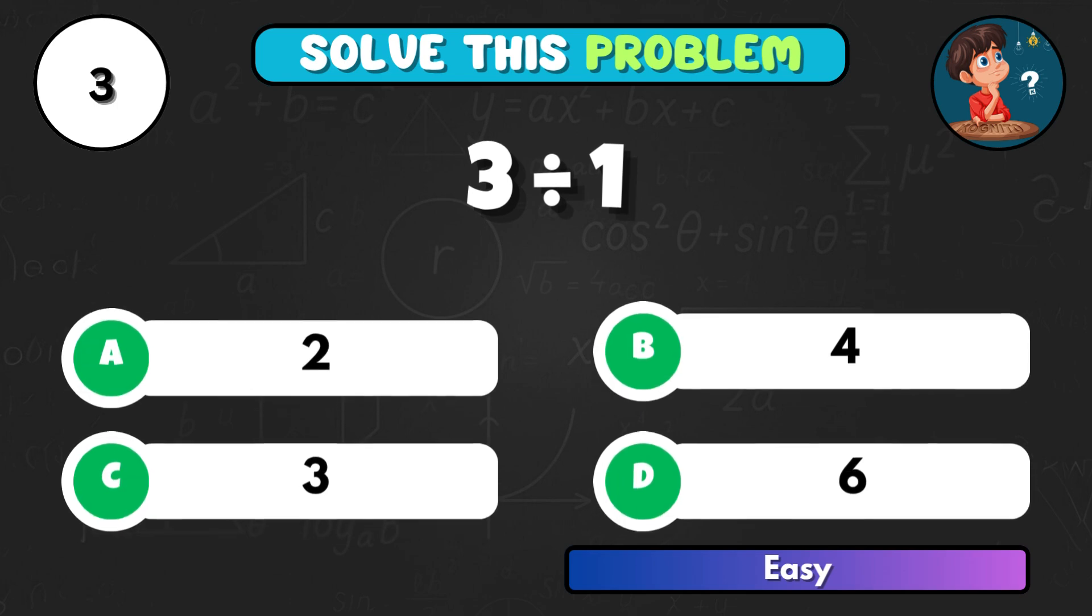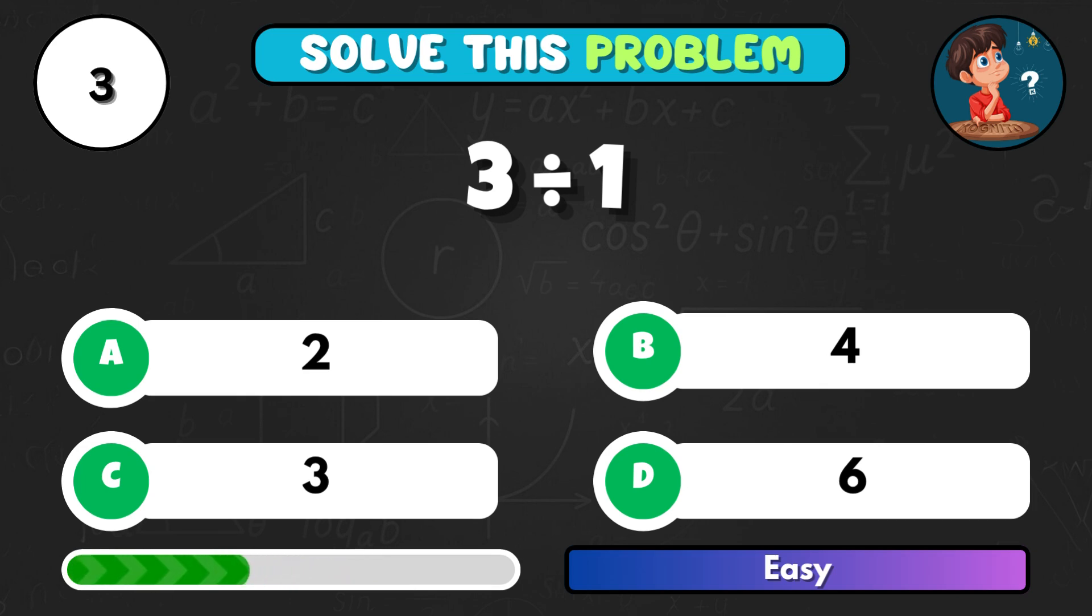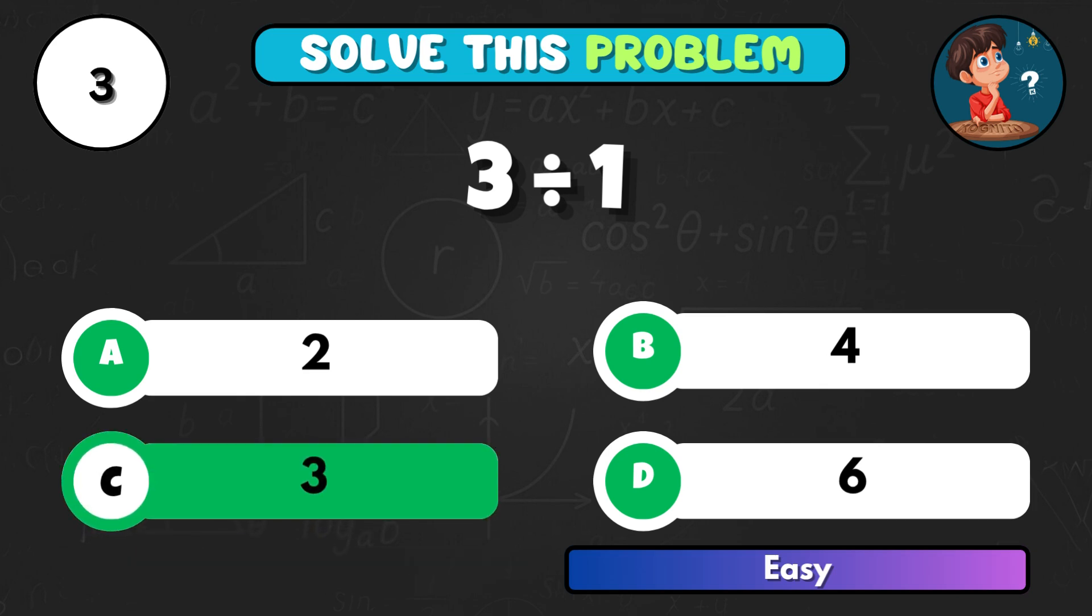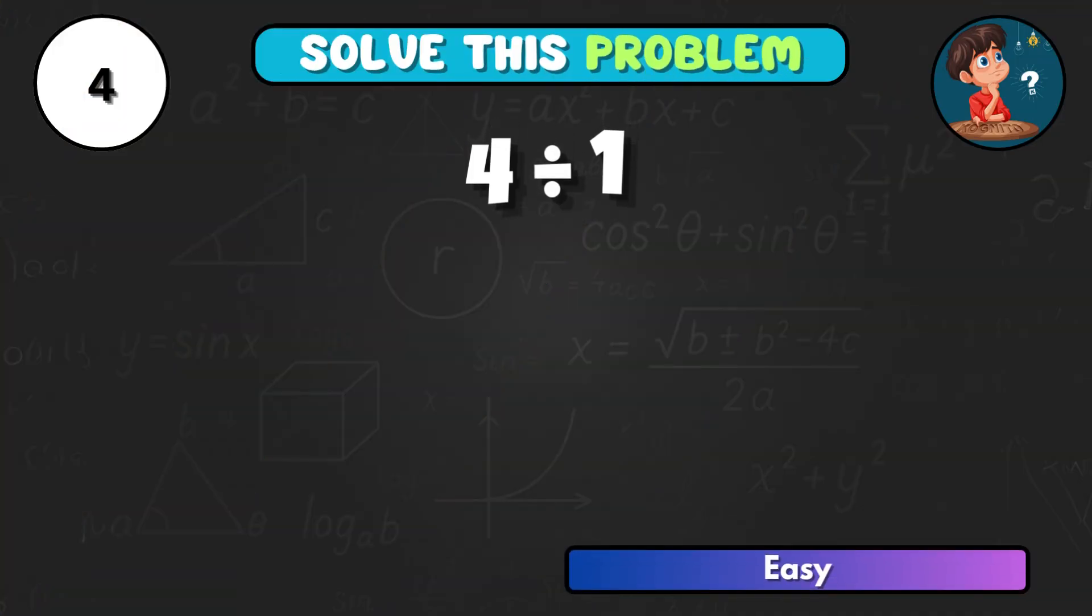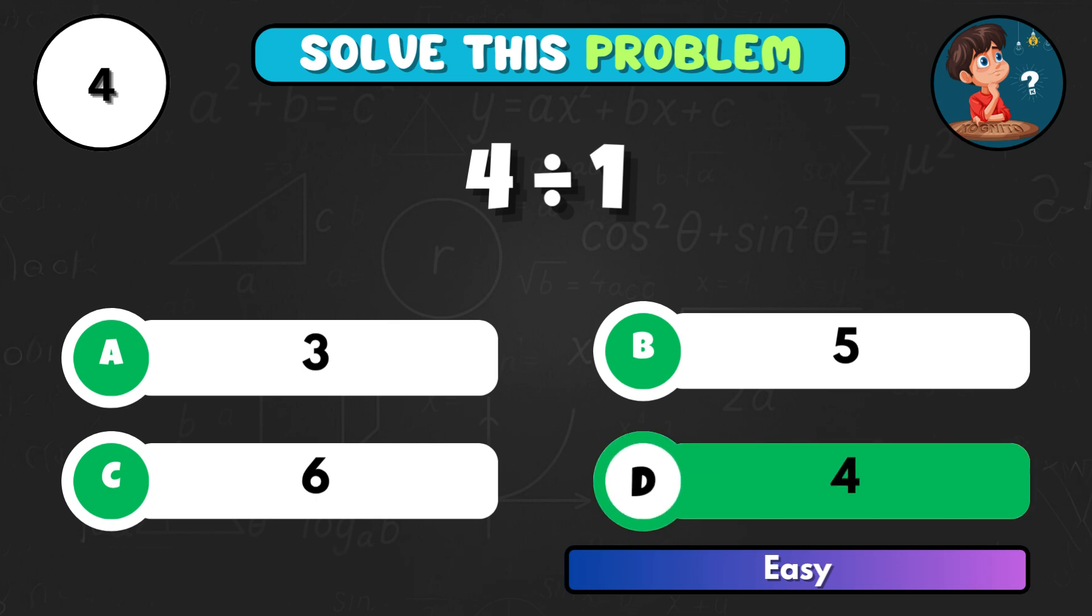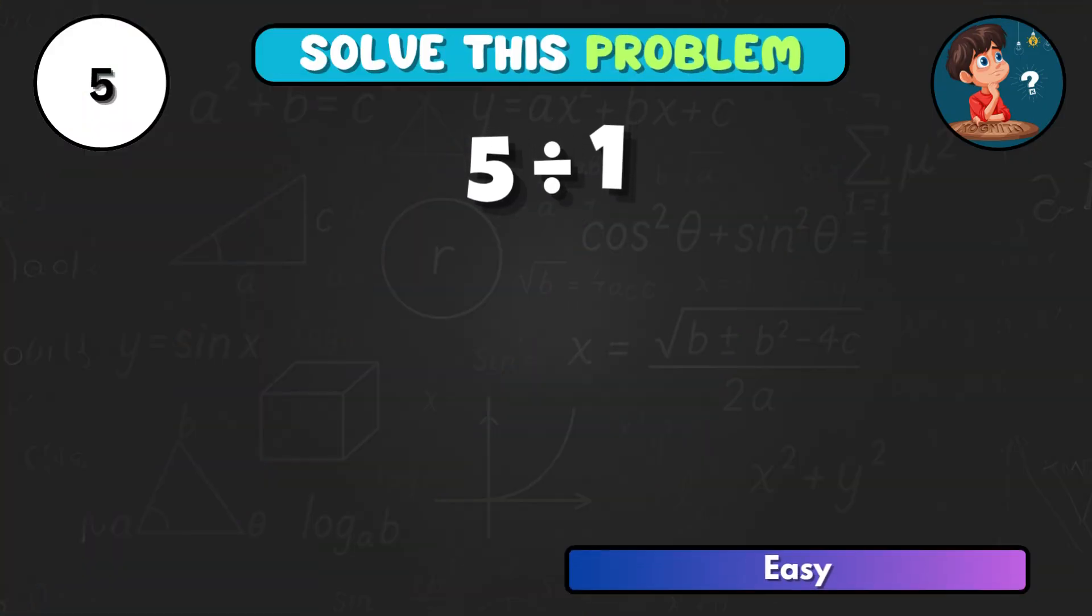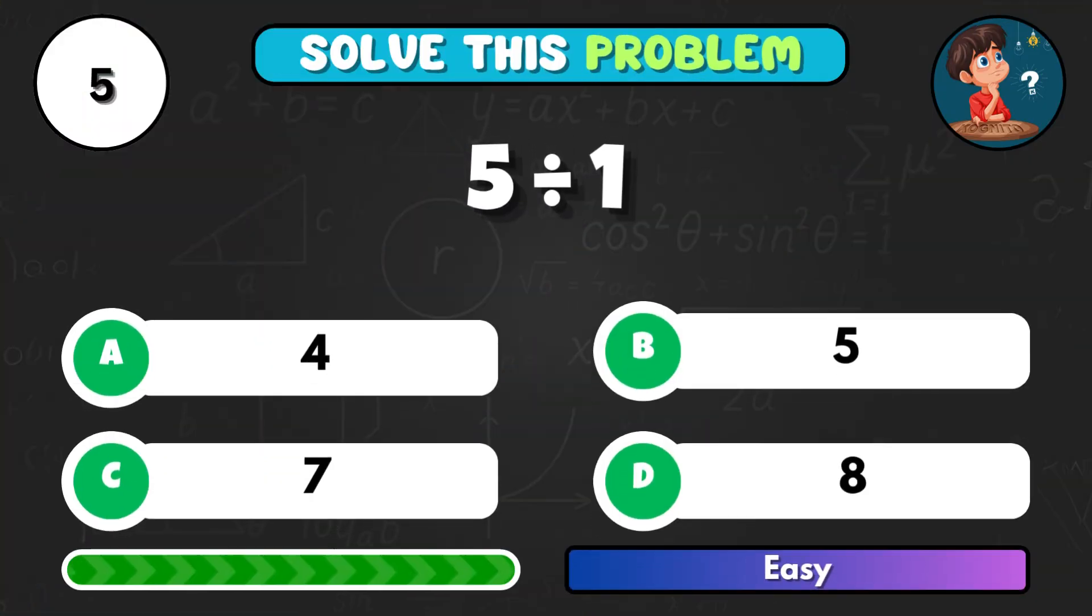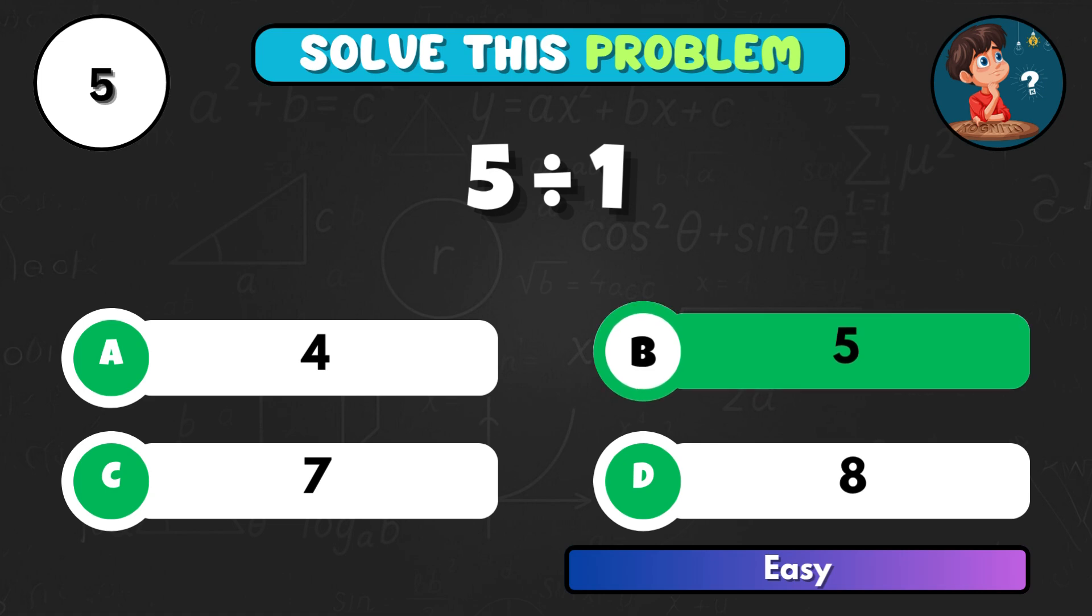Now divide 3 by 1, what do you get? Correct answer C, that's 3. How about 4 divided by 1, what's the result? Option D equals 4. And 5 divided by 1, that gives you? Correct letter B equals 5.